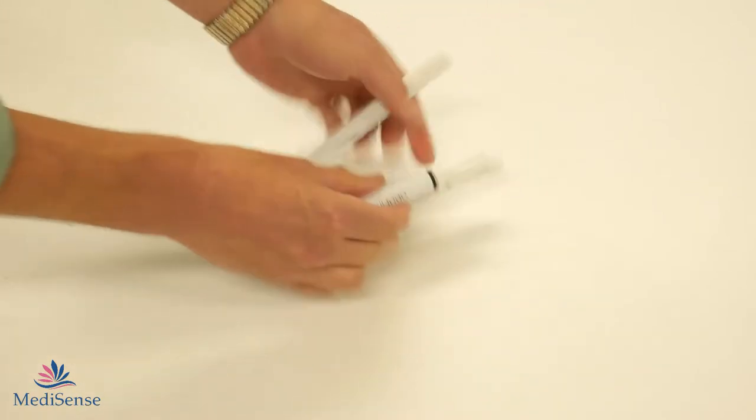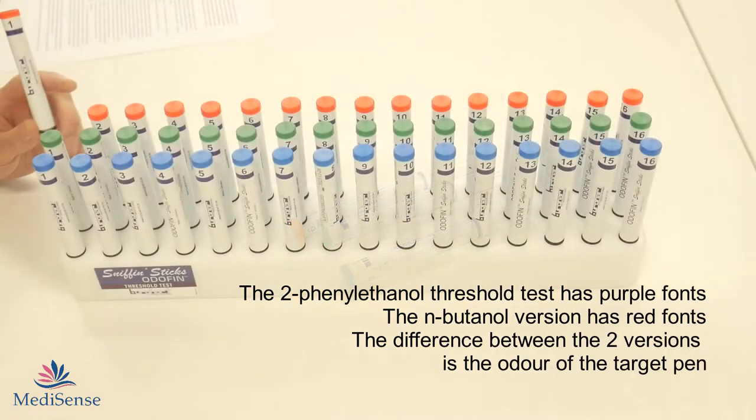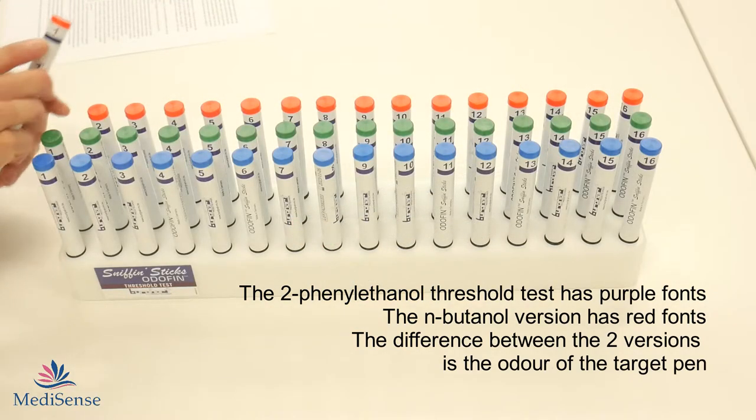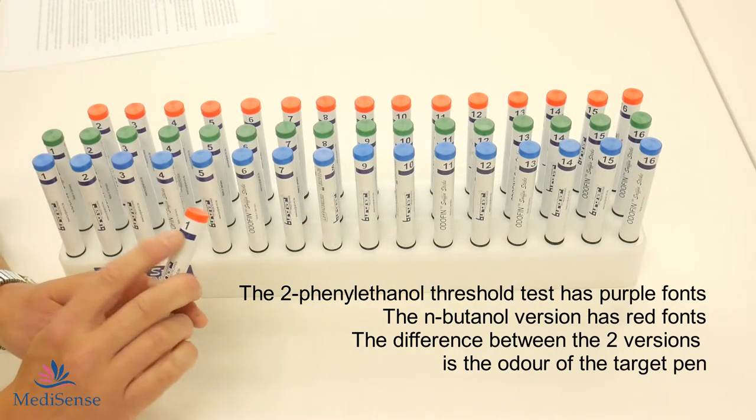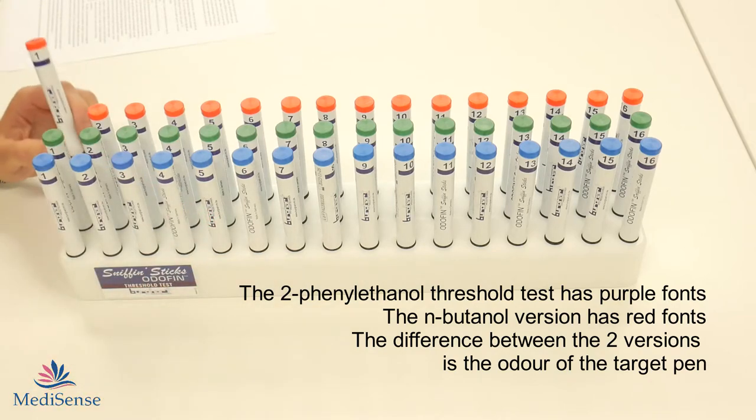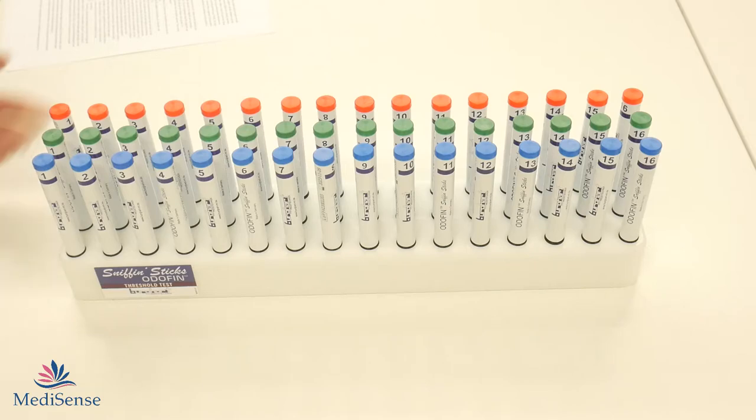In this case we are using the threshold test 2-Phenyl Ethanol. You can see that from the purple bands. But we also have the n-butanol version and in that case the bands are red instead of purple.